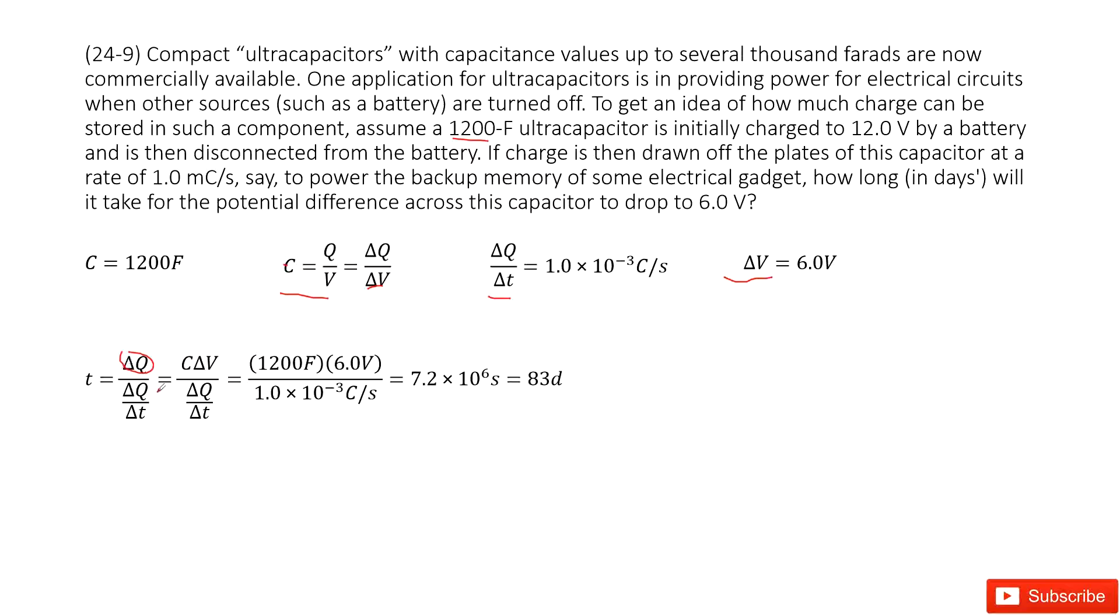It's very easy to understand. The total charge change divided by the change rate. And the total charge delta Q can be written as C capacitance times the potential difference change.